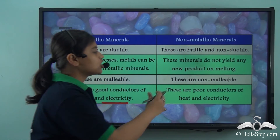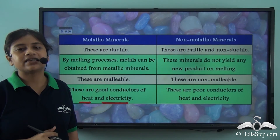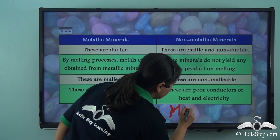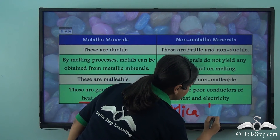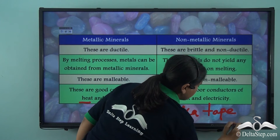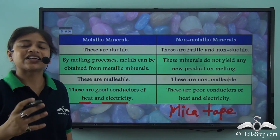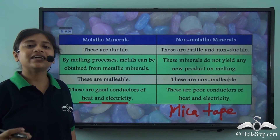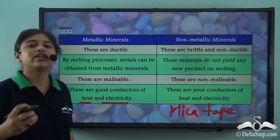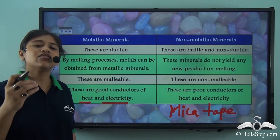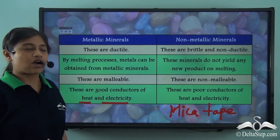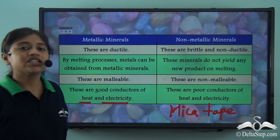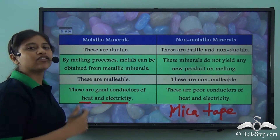On the other hand, non-metallic minerals are poor conductors of heat and electricity. This is why mica tape is used for electrical purposes — because it is a poor conductor of heat and electricity, it acts as a good insulator and also protects from any sort of fire. So these are the key differences between metallic and non-metallic minerals.